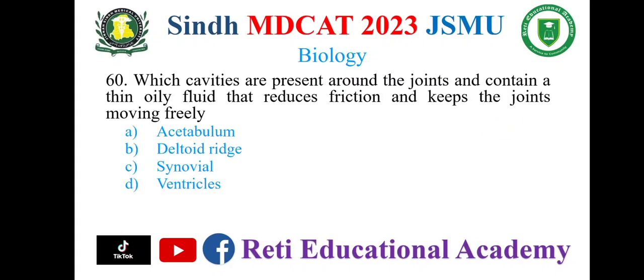Question 60: Which cavities are present around the joints and contain a thin oily fluid that reduces friction and keeps the joints moving freely? A. Acetabulum, B. Iliotibial ridge, C. Synovial, D. Ventricles. The correct option is C: Synovial.